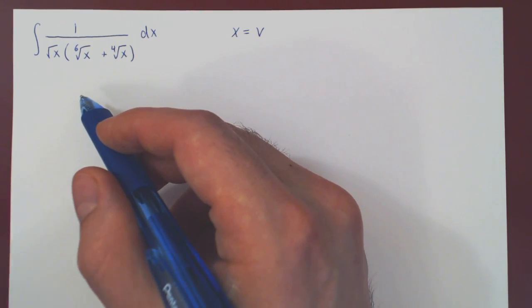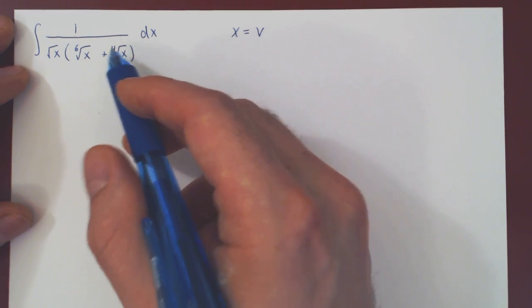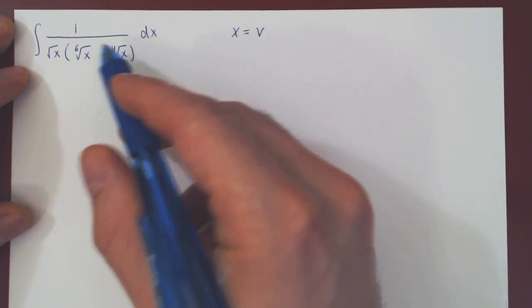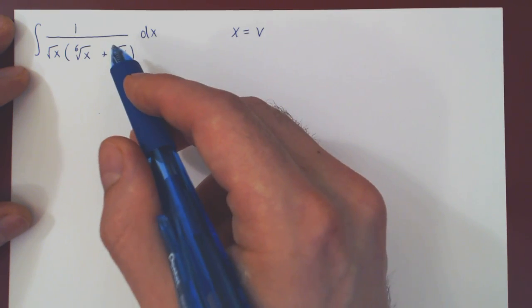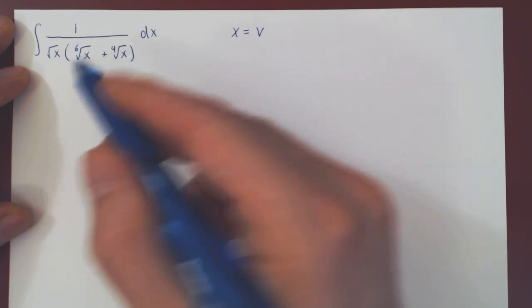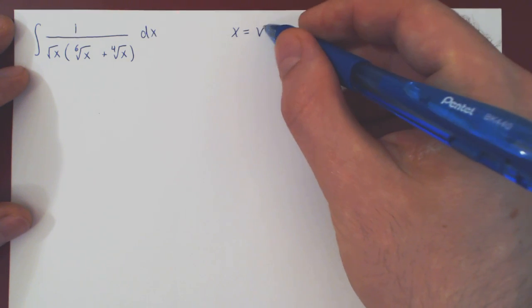So we're looking for the smallest integer that is divisible by 4, by 6, and by 2. If you were going too quickly here, you would simply say, well okay, 4 times 6 is 24 and 24 is divisible by 4, 6, and 2, so you could go with x being v to the 24.